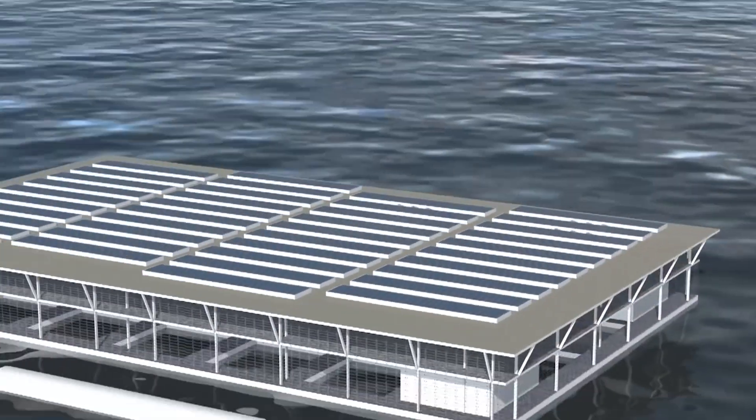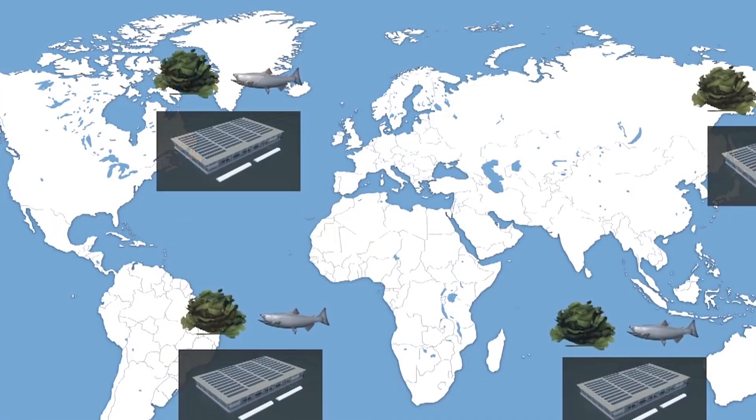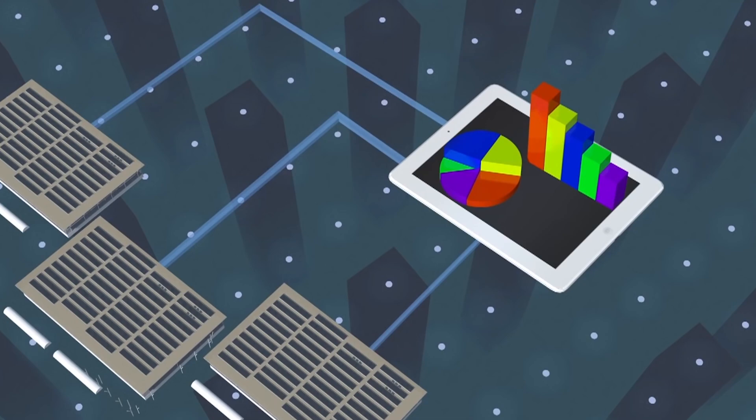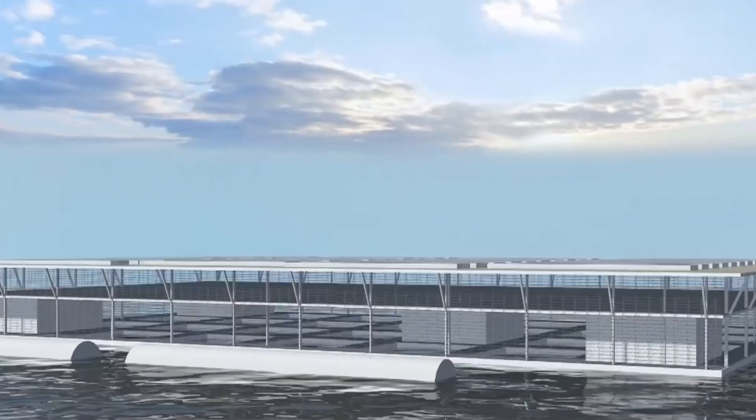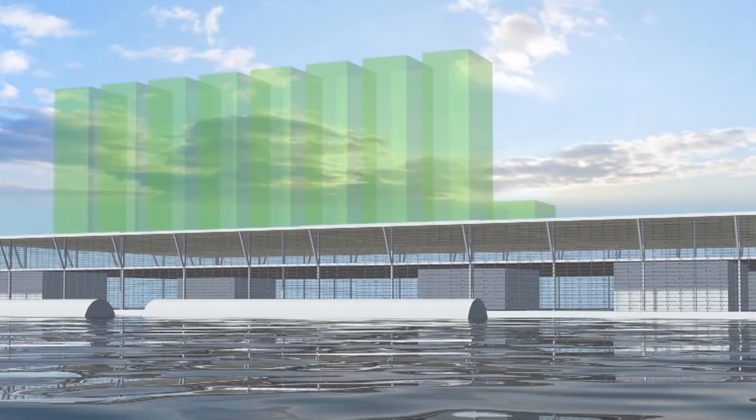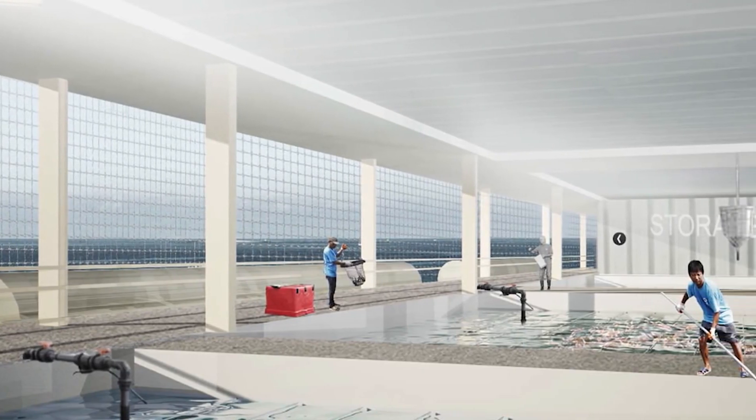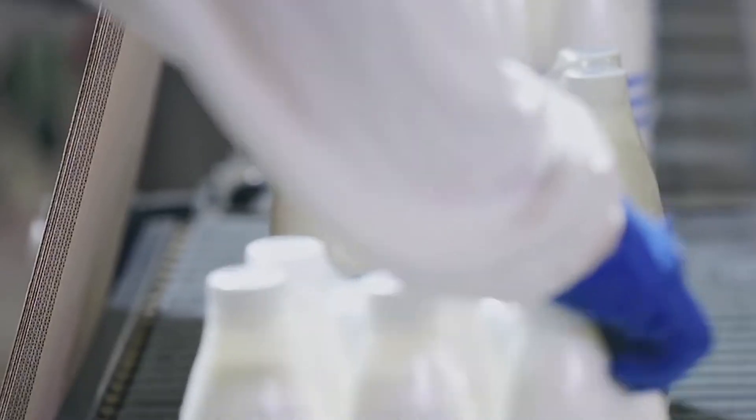They have introduced the idea of floating farms with huge complexes on surfaces of oceans. These temporary farms can be moved to areas where they will be needed. One such farm is also operating in the port of Rotterdam, Netherlands. Floating farms will be helpful in disaster-hit places, as they will provide food instantly.